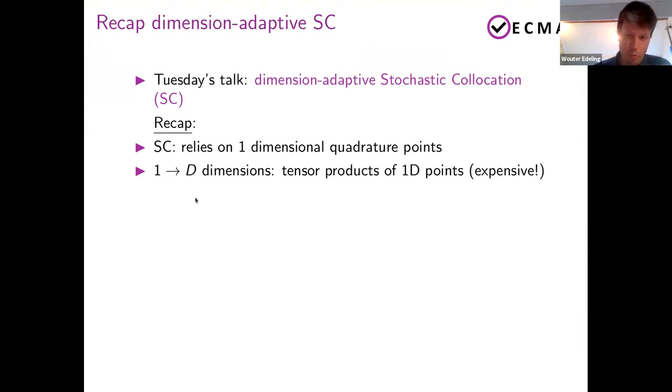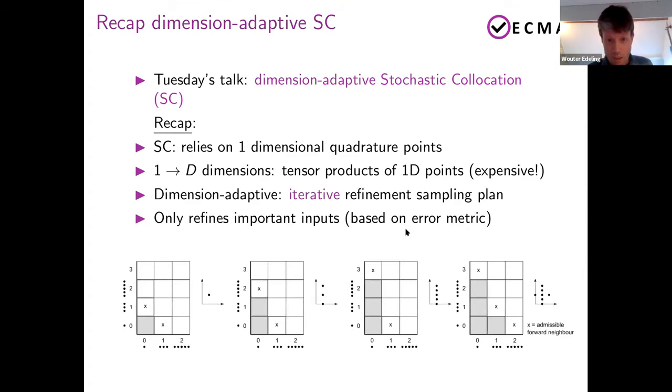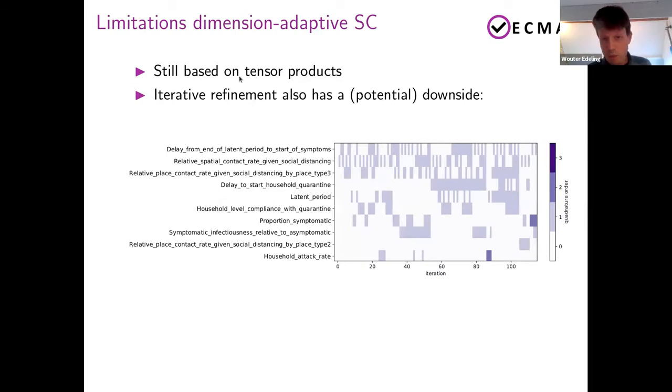I've mentioned this before, but just a short recap, that if you do these kinds of methods, you're relying on one-dimensional quadrature nodes, which are extended to higher dimensions via tensor products. And then it's this tensor product that can become potentially very expensive in number of simulations. And if you do an adaptive version of that, you are making your sampling plan in an iterative fashion. You're starting with a single sample and you're building it up in directions which turn out to be important.